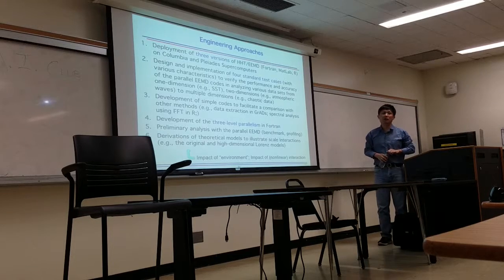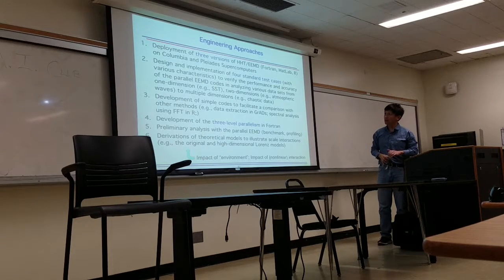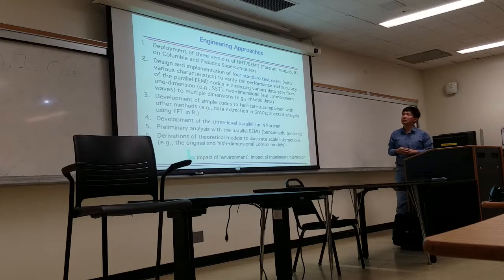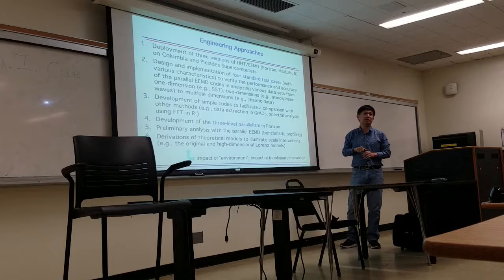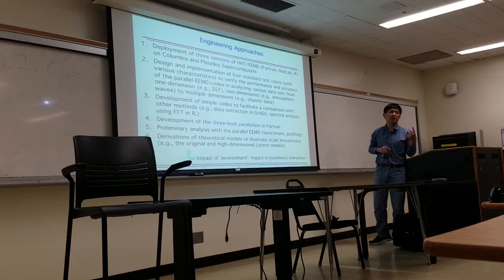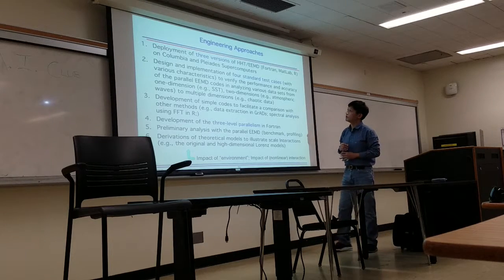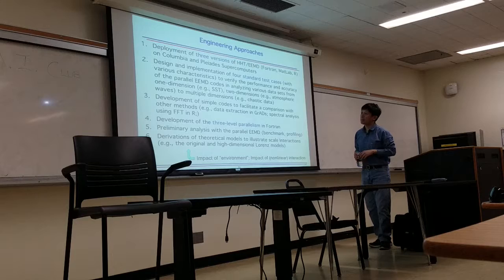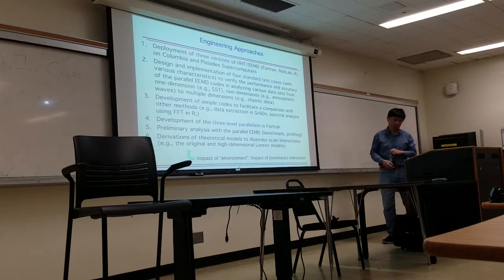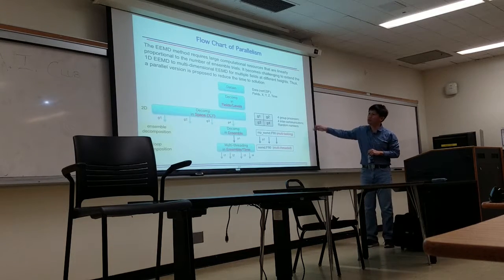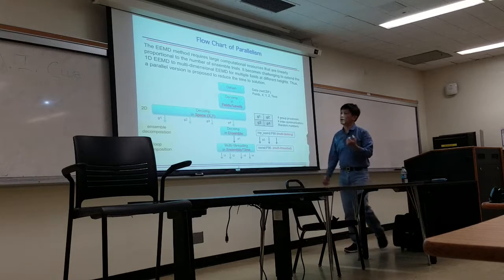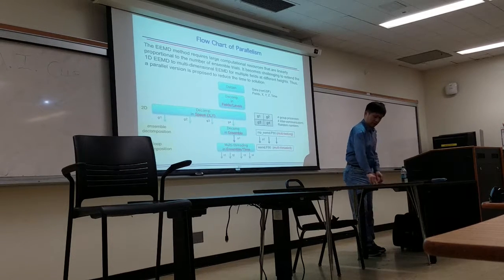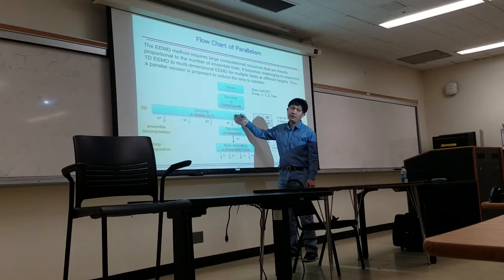So this is basically how we perform our research. We begin with the deployment of EMD in Fortran, MATLAB, and R. We carefully choose four standard tests. I represent the 1D time series data, 1D spatial, 2D spatial, 3D spatial. So we choose those to help us test our new code. And then we do the three-level parallelization. Here, I briefly show how we do the parallelization. We have the 3D spatial data. Here, we only do the decompositions in 2D. It means that if you imagine this is 2D, we decompose the 2D data into different pieces. This is the first level of parallelization.